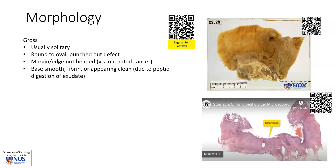Grossly, peptic ulcers are usually solitary, although we do see two ulcers here. They have a characteristic very punched-out appearance, as you see here, with flat and sharply defined edges. If the edges or margins are heaped up, fleshy, or raised, then this may actually indicate a malignant ulcer rather than peptic ulcer disease, which is benign.